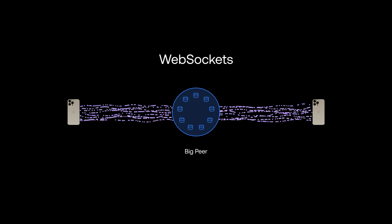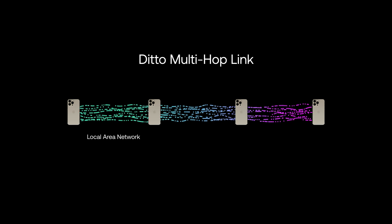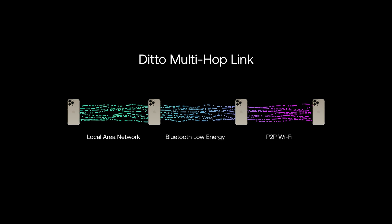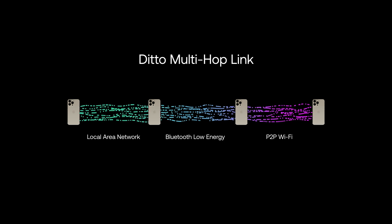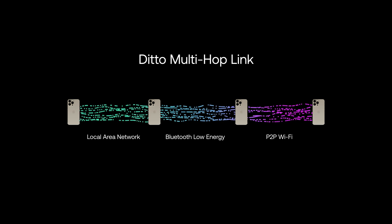The most powerful feature of the Ditto Mesh network is our multi-hop link, where devices can talk through each other via intermediate communication channels. For example, one peer can talk through a first hop of local area network communication, then Bluetooth Low Energy, and through a final peer via peer-to-peer Wi-Fi. This makes Ditto an incredibly powerful mesh network stack that utilises all possible transportation protocols on the edge device to maximise the mesh's general availability.